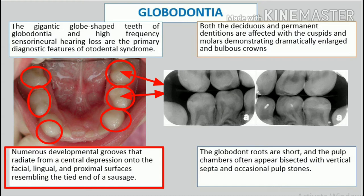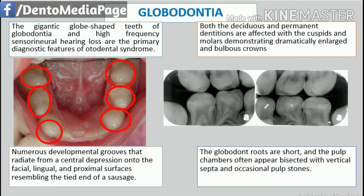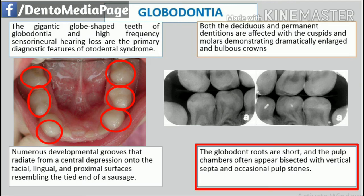These developmental grooves radiate onto the facial, lingual, and proximal surfaces, resulting in an occlusal surface that has been described as resembling the tied end of a sausage. The globodont roots are short, and the pulp chambers often appear bisected with vertical septa and occasional pulp stones.